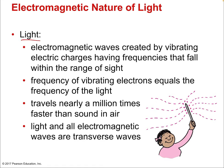So what is light? Light is an electromagnetic wave created by vibrating electric charges having frequencies that fall within the range of sight. When we talk about visible light, that's what we mean by the range of sight. All electromagnetic radiation — including radio waves, microwaves, and x-rays — is technically light. People use that term differently across fields, but it really is correct to say it's all light. The range of sight specifically, we call visible light.